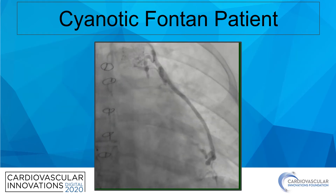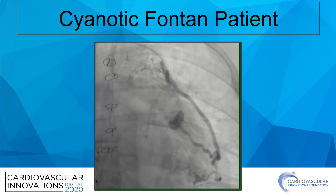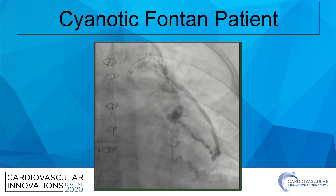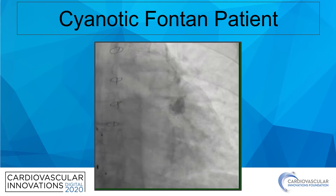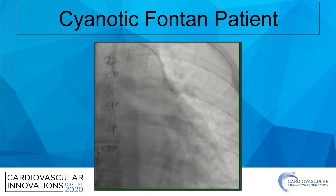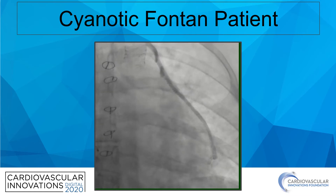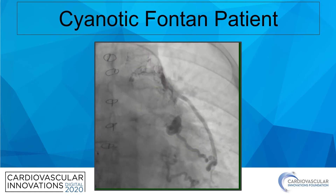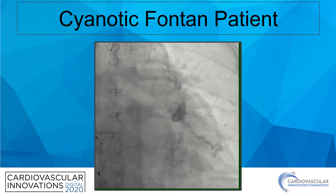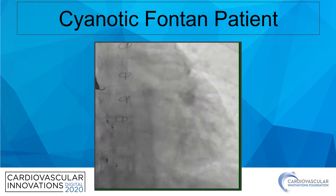You can appreciate how tortuous and complex these venous structures can sometimes be. The complexity of these collaterals falls on a spectrum. This is a good example of a collateral on the lower end of the spectrum, where you have a good linear structure with a good landing zone for use of embolization devices.